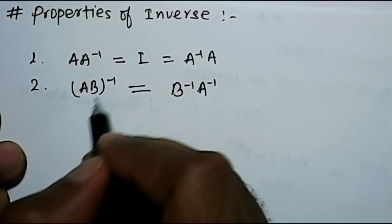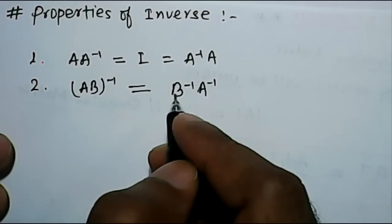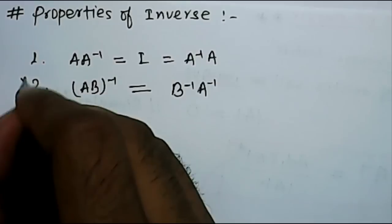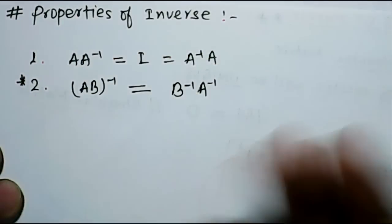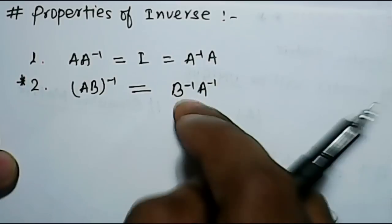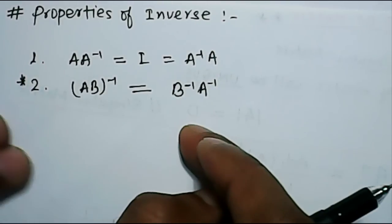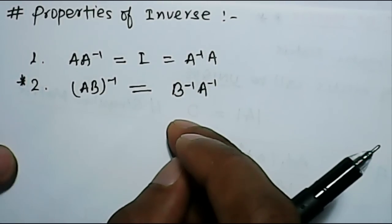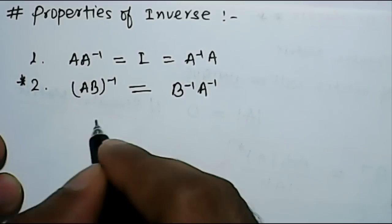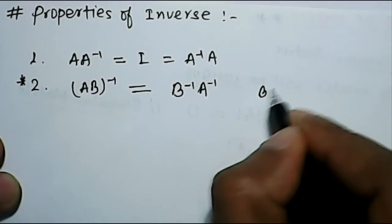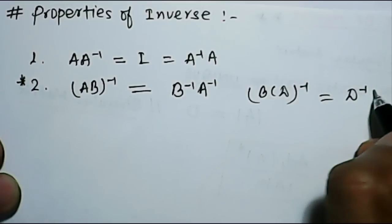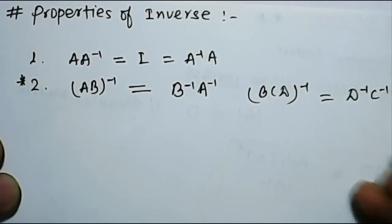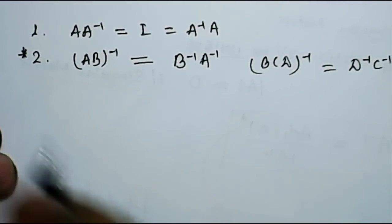So, the order will be changed here also. Again, the order is changing. So, just remember the things where if we take the whole inverse, the order is changed. These kind of things you can write down at the same place and it will help you to remember. Similarly, if you have B, C, D and then whole inverse, then it will be equal to D inverse, C inverse, B inverse.